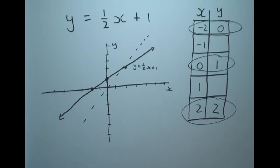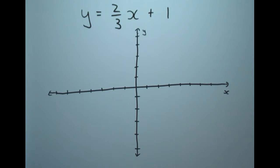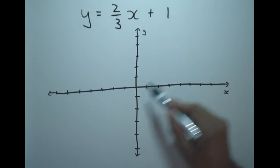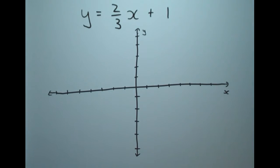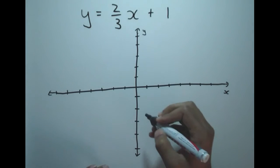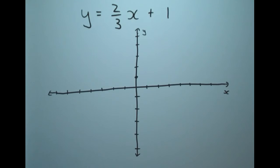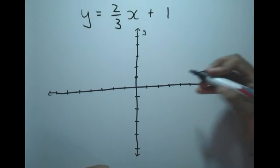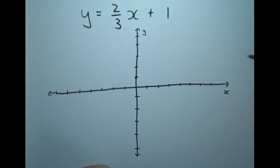Now we'll cover the rise over run method. Let's look at the line y = ⅔x + 1. From this equation the gradient is ⅔, which is positive, so we expect a line going in the positive direction. The y-intercept is +1, so the line crosses the y-axis at 1. With the rise and run method, we interpret the gradient as rise over run — so for ⅔ we rise 2 and run 3, starting from a known point like the y-intercept.